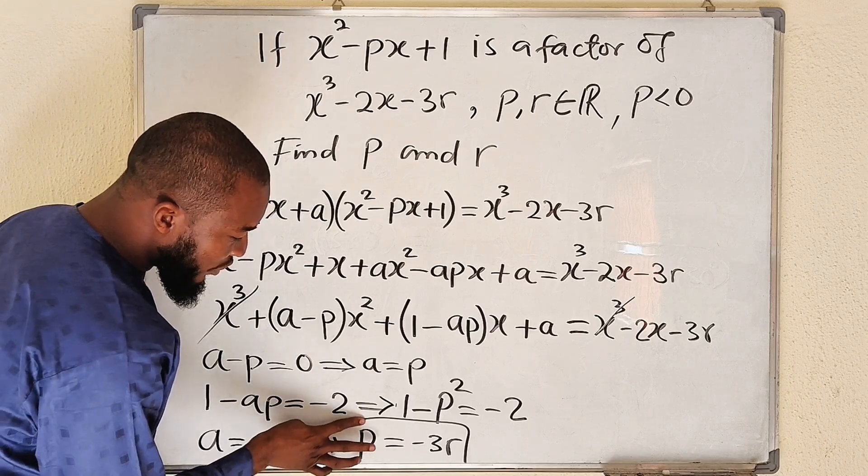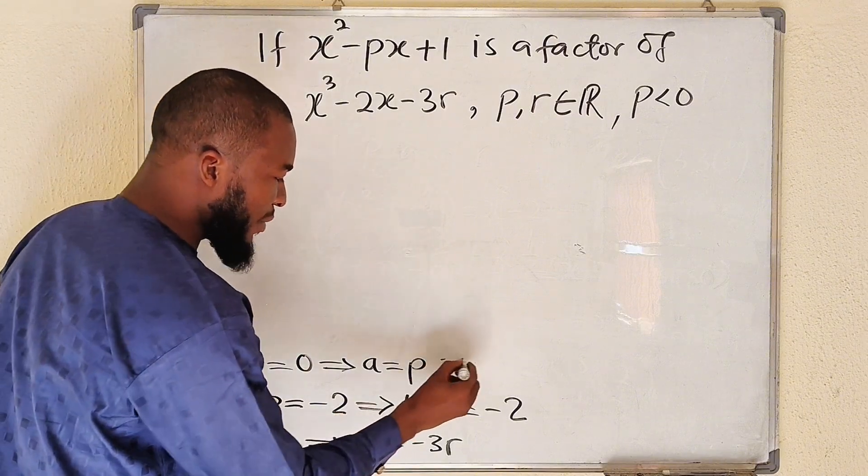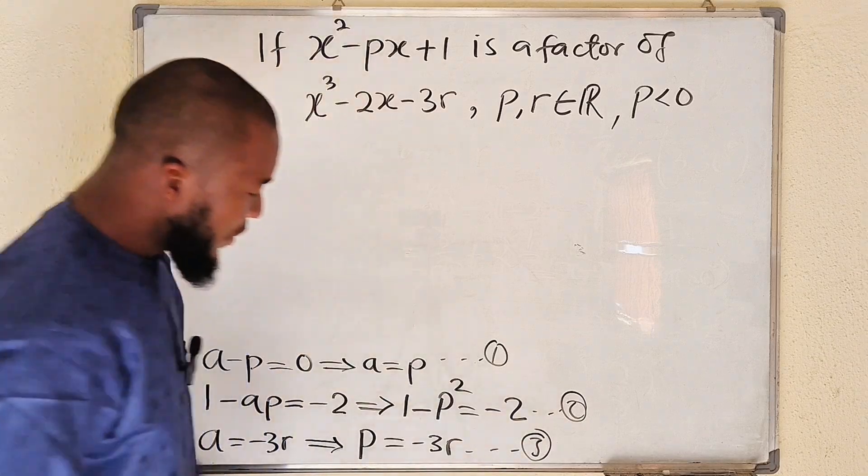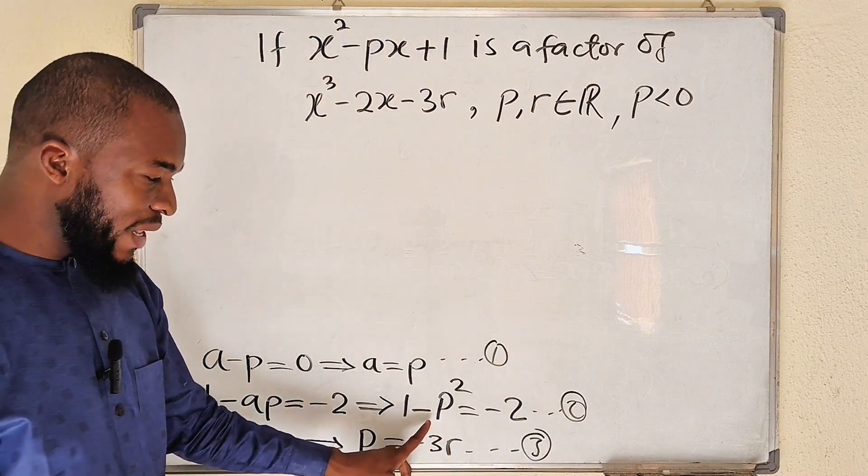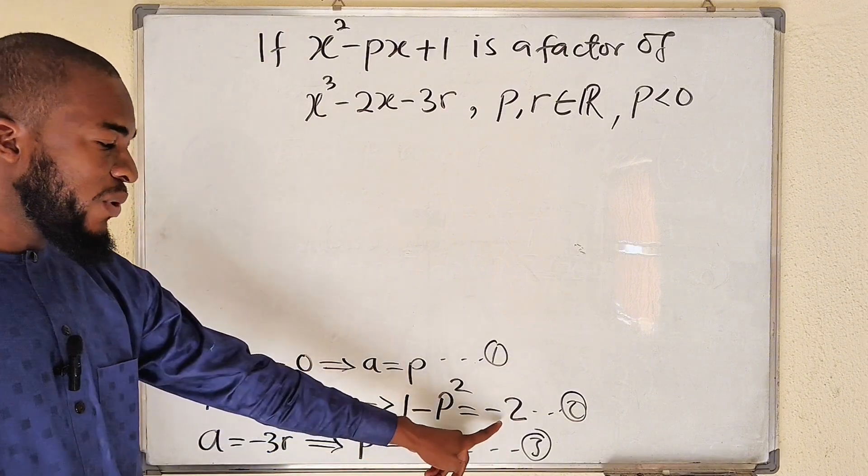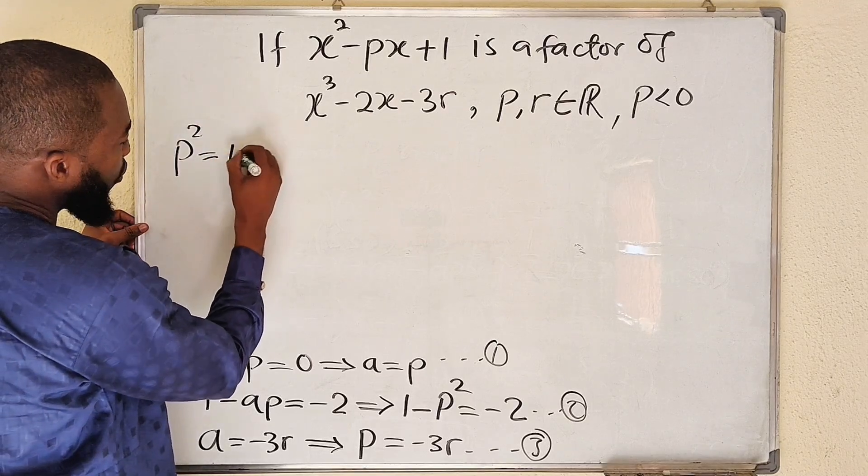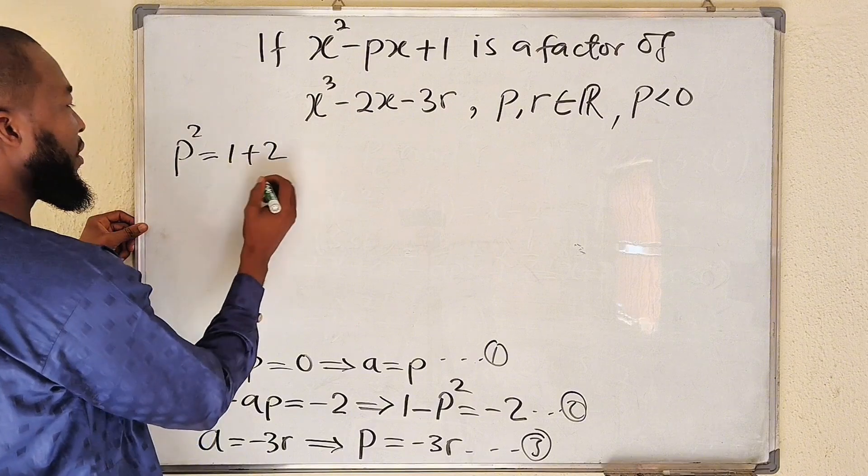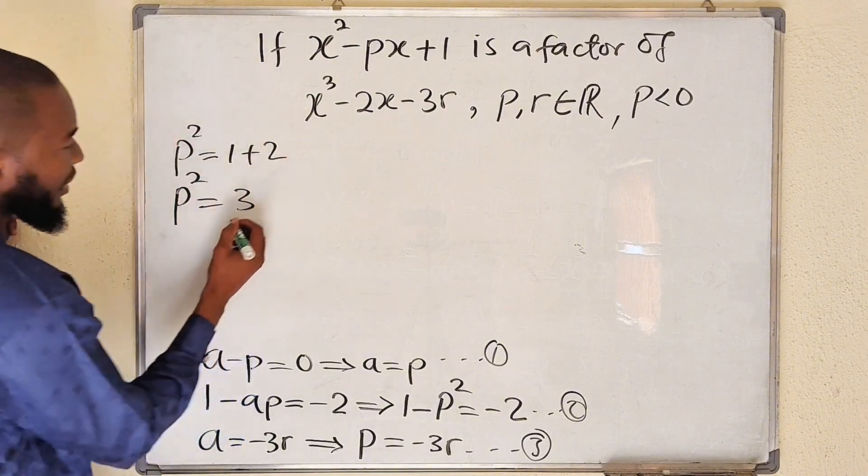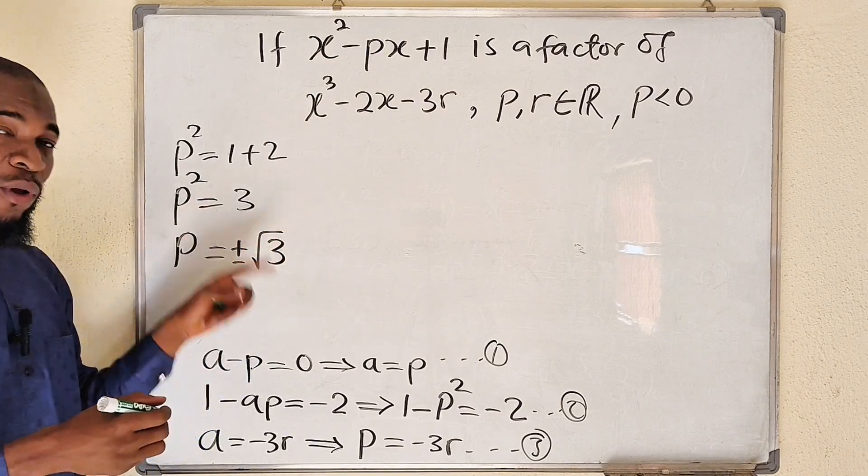So let me go to the top and continue solving. So from this second equation, because I can name them as 1, 2, and 3, from this second equation, you can swap negative p squared to the other side and bring negative 2 to the left hand side. This will become positive. This will be positive. Therefore, p squared will be equal to 1 plus 2, which is 3. Therefore, p squared equal to 3, and p is equal to plus or minus the square root of 3.